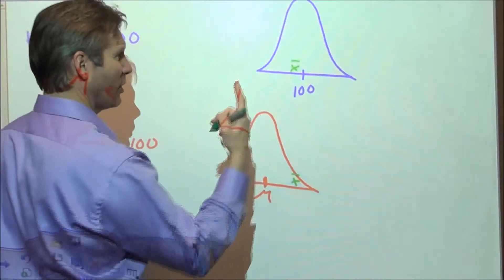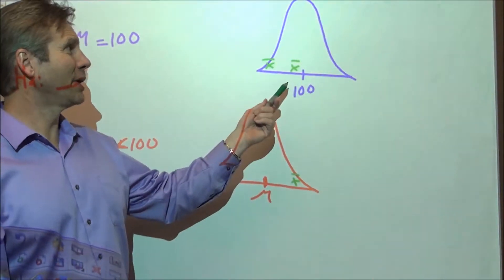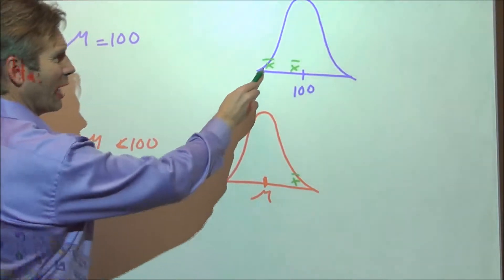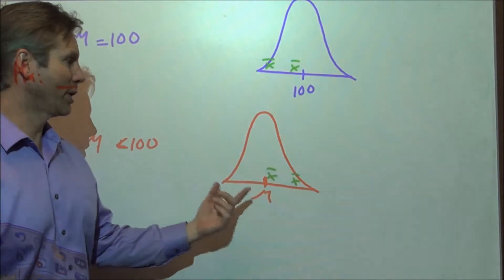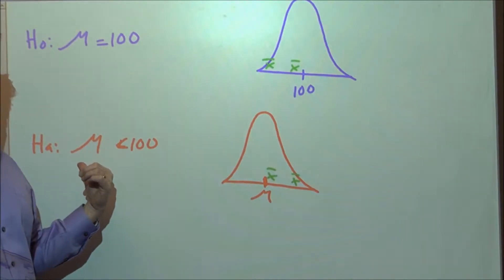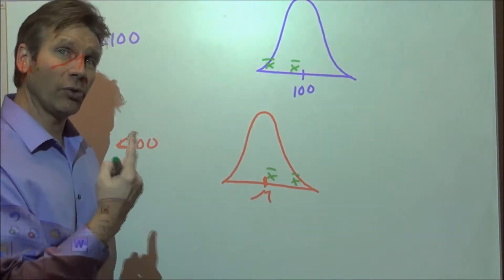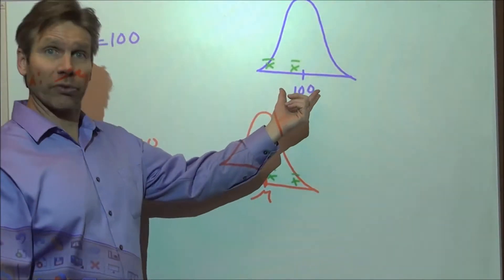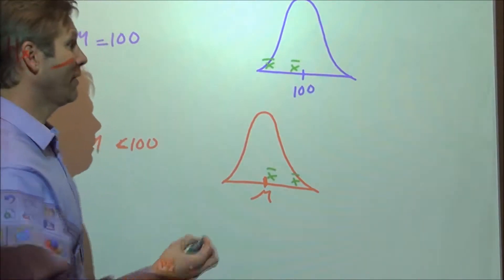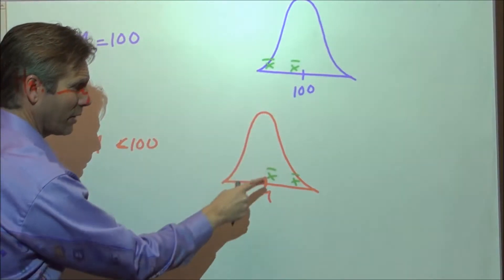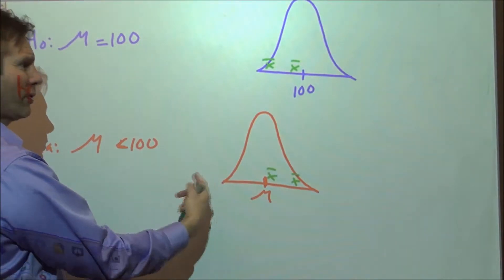However, if instead we got a sample mean way down here, that's a pretty unusual result coming from a sampling distribution where the true mean is 100. That would be a much more typical result coming from a population where the true mean was less than 100, so that would tend to make us believe the alternative is true. There are two explanations for getting a result way down low: either it's due to random chance and the null is true — the mean really is 100 — or the alternative is true and the null is incorrect.